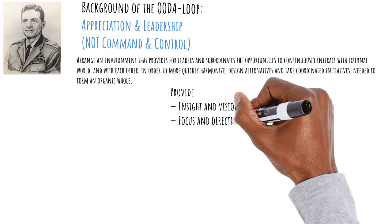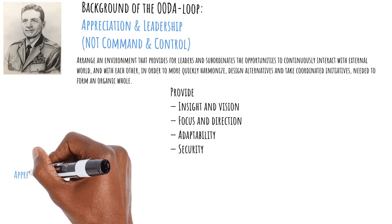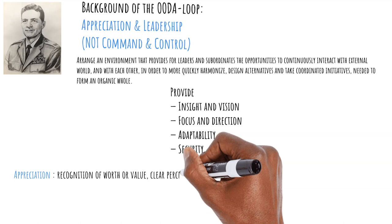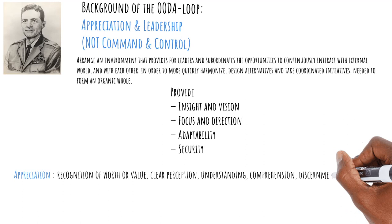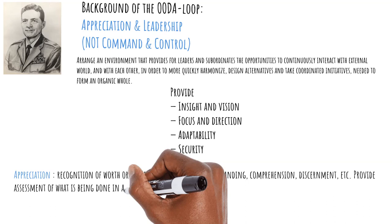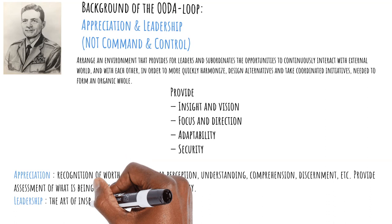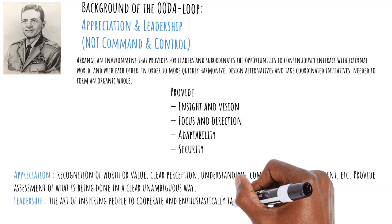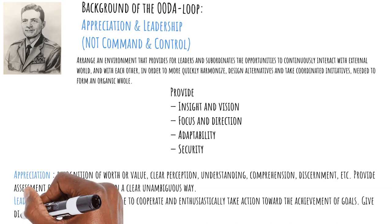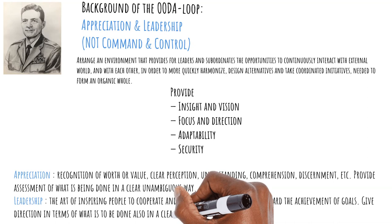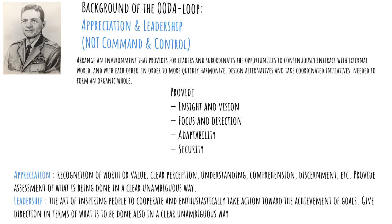For the execution of this function, he describes appreciation as, quote: Recognition of worth or value, clear perception, understanding, comprehension, discernment, etc. The structure must provide assessment of what is being done in a clear unambiguous way. In short, the environment is goal and action-driven. Members work together in a culture of cooperation, open communication, and esteem. Leadership he describes as, quote: The art of inspiring people to cooperate and enthusiastically take action toward the achievement of goals. Leaders give direction in terms of what is to be done, also in a clear unambiguous way. In short, leaders are facilitators, motivators, enablers, unambiguous communicators, and inspirators.